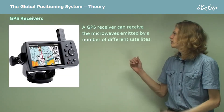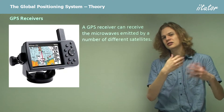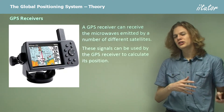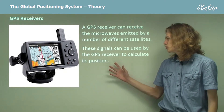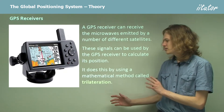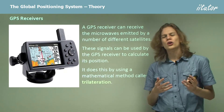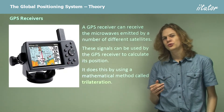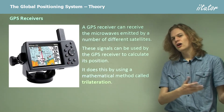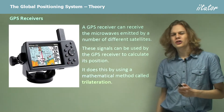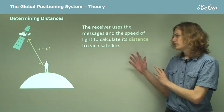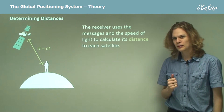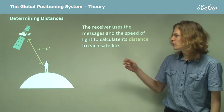A GPS receiver can receive these microwaves that the satellites are sending out, and if it receives a number of different signals from different satellites it's able to figure out its position. It does this with something called trilateration. In order to use trilateration it needs to be able to decode the time signals sent by each satellite. The receiver uses the messages in order to calculate the distance to each satellite, and we can see the equation used to do that over here.